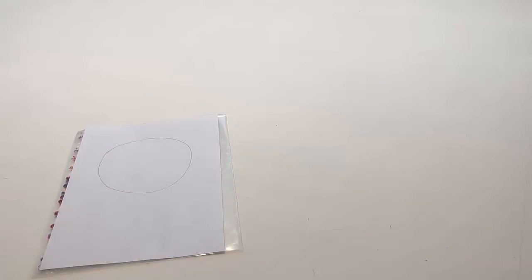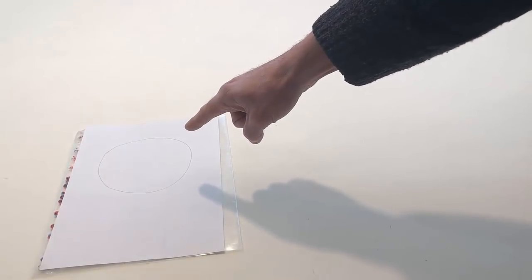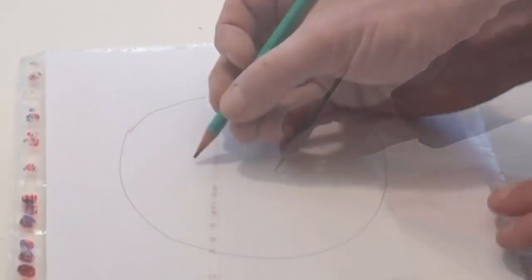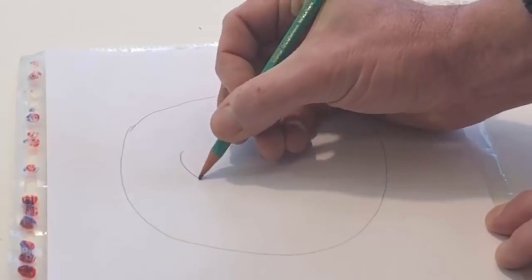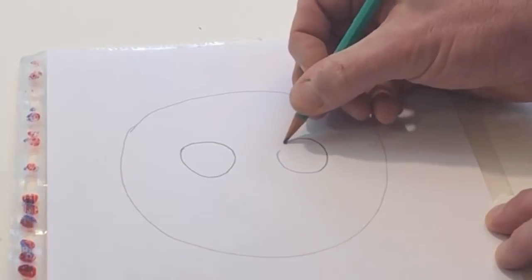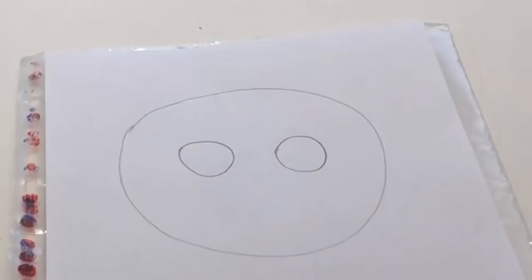Point to the circle. Draw two smaller circles in the middle of the big circle. Put two dots in the middle of the two smaller circles.